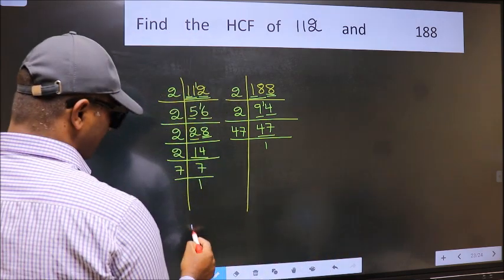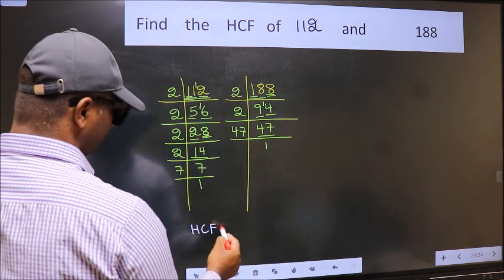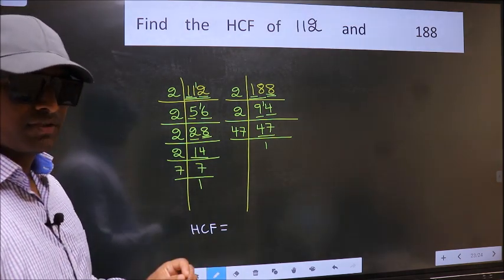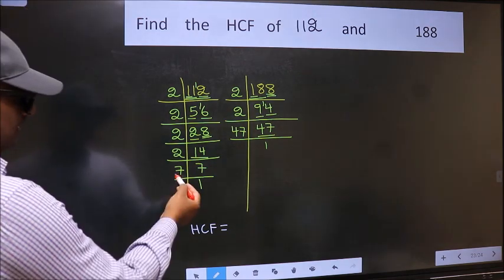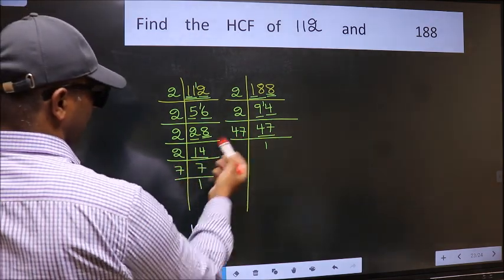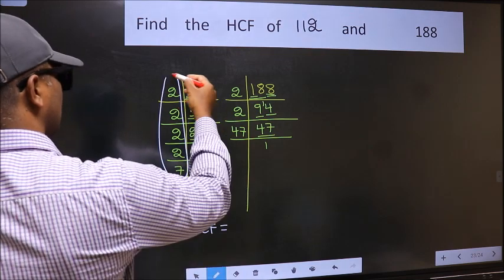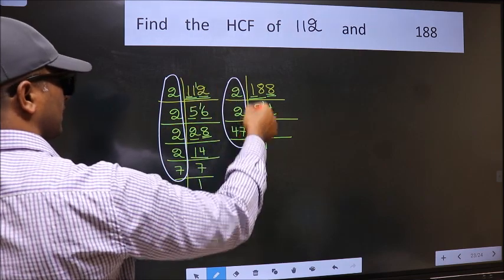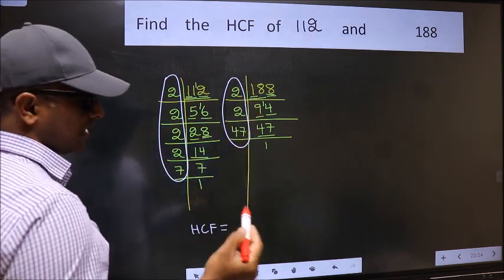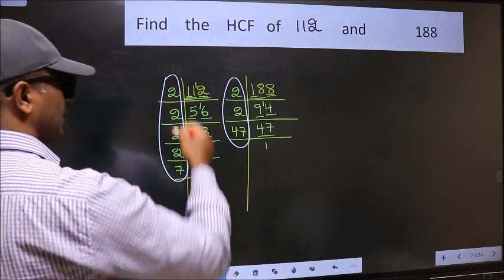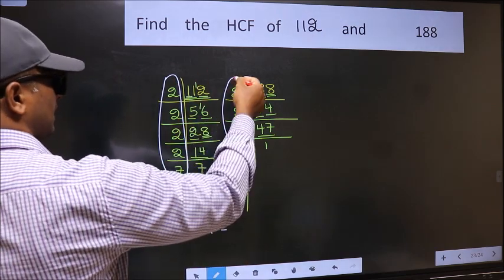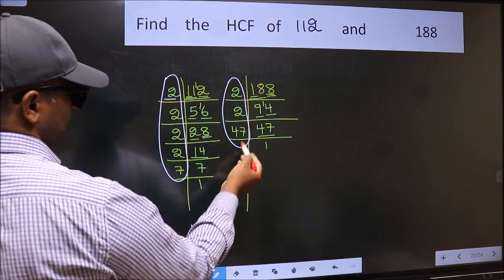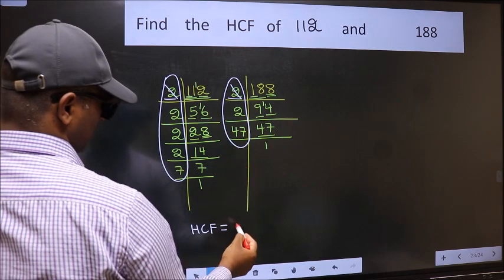Therefore, our HCF is the product of the numbers which should be present in these two places. That is here and also here, here and here. So now let us find the numbers which should be present here and here. Starting with the number 2, do we have 2 here? Yes. So cut 2 right here.